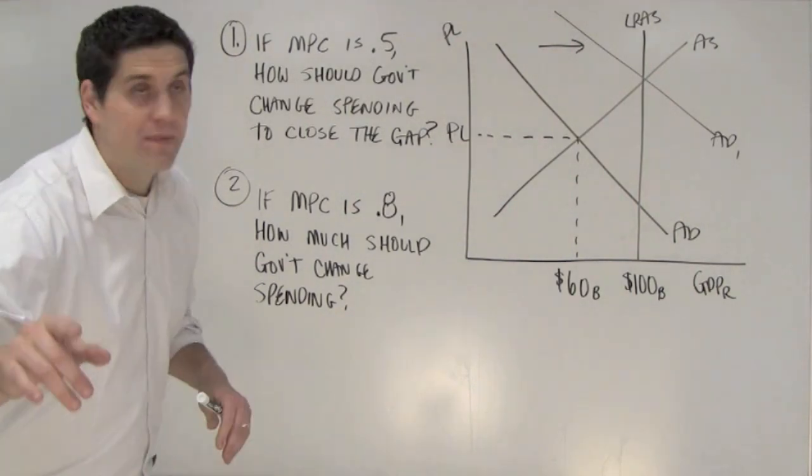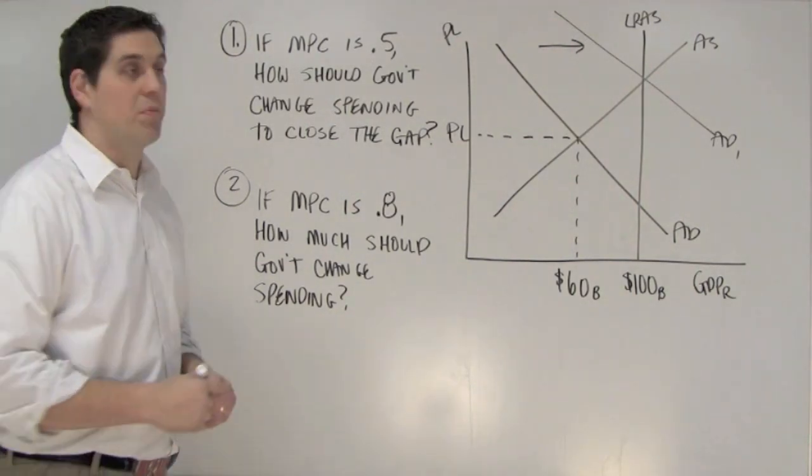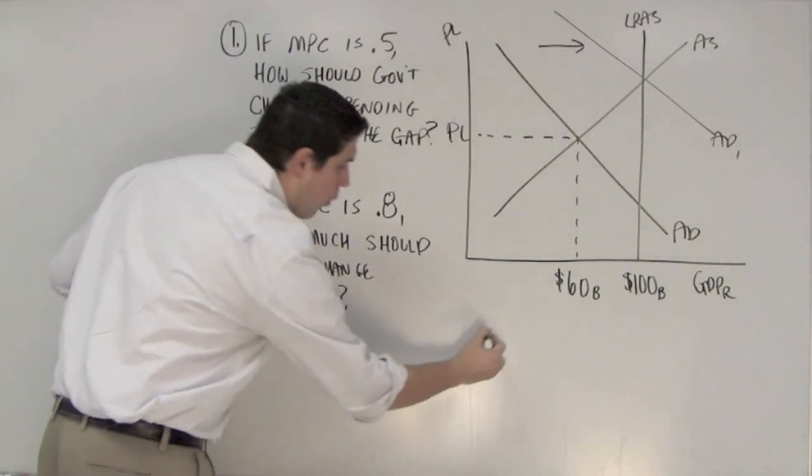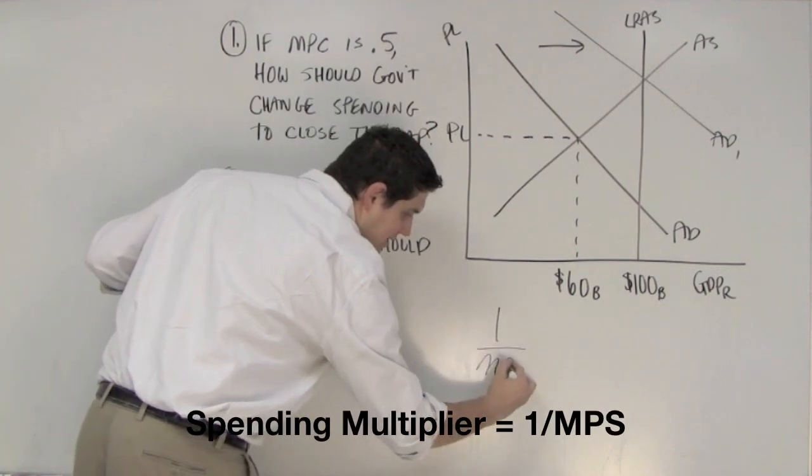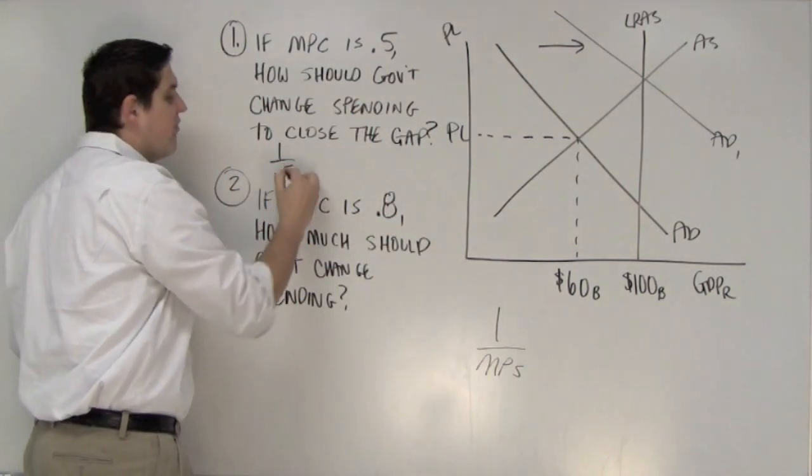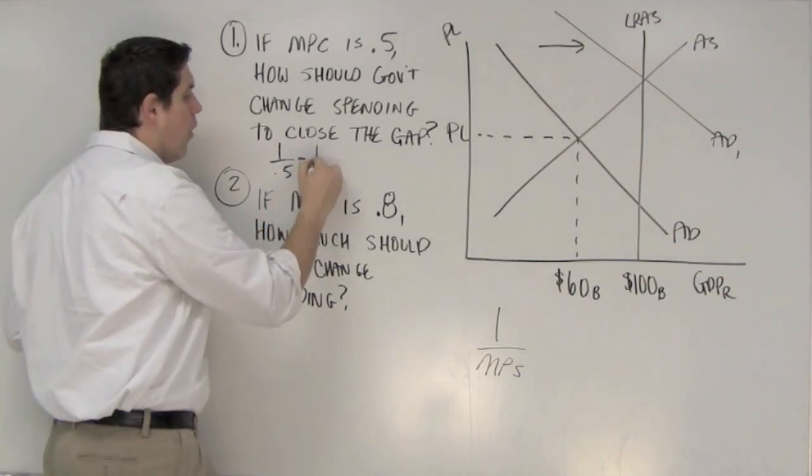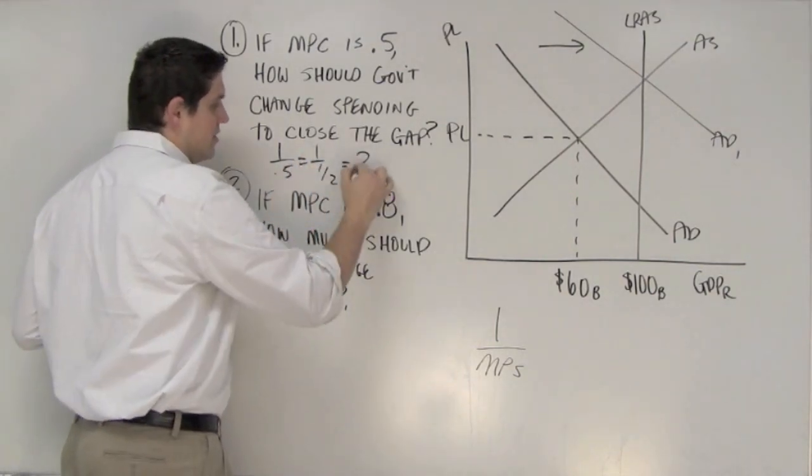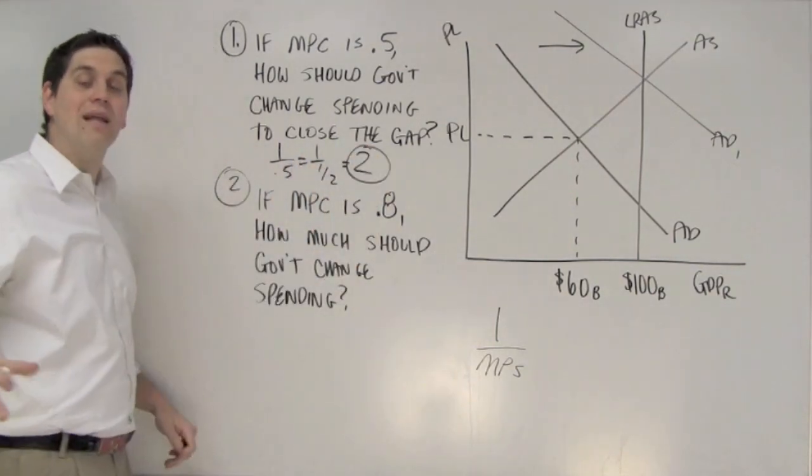Alright, you got it? Alright, let's first calculate the spending multiplier. The spending multiplier, as you know, is 1 over the marginal propensity to save. So, 1 over, in this case, 0.5, so it's 1 over 1 half, and that is 2. The spending multiplier is 2, but that's not the answer.